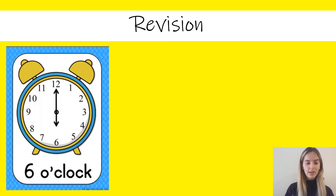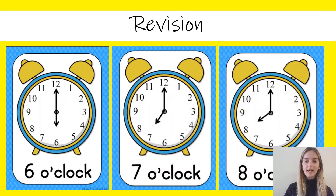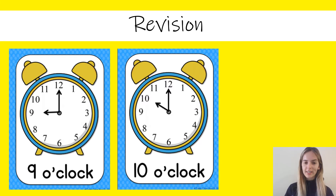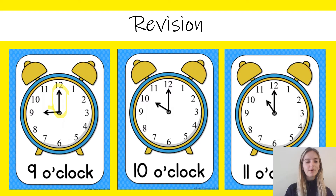Next we have six o'clock, seven o'clock and eight o'clock. Now we have nine o'clock, ten o'clock and eleven o'clock. Again our long hand, our minute hand, has always stayed on the twelve. And our short hand is pointing to whatever number it is for us to read the time.